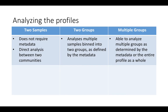Using STAMP software, you can analyze your profile in one of three levels. At the two-sample level, you can do a direct analysis between two communities — notice that this is the only level in which you do not need to input a metadata file for your analysis. At the two-group level, you can analyze multiple samples binned into two groups, as defined by your metadata. And at the multiple-group level, you can analyze more than two groups, or you can look at your sample as a whole.